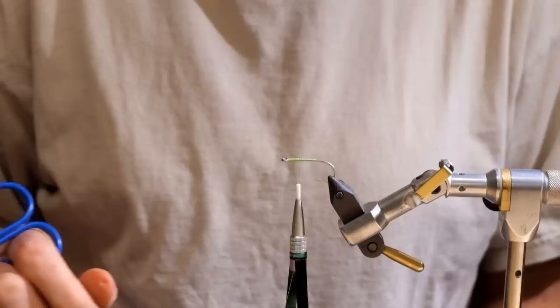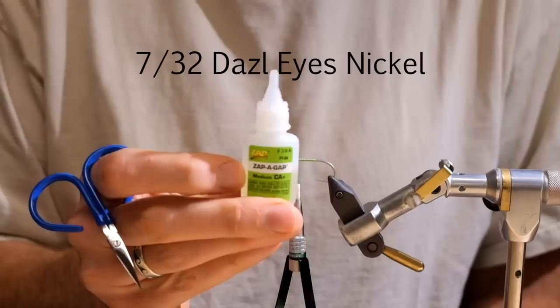I got my hook in the vise. I've got a thread base going from just in front of the hook point up to the hook eye and now we're ready to put on the eyes.